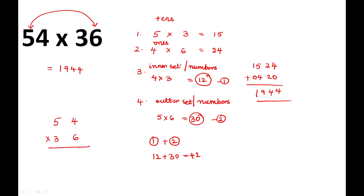Let's verify: 6 × 4 = 24, carry 2; 5 × 6 = 30 + 2 = 32, put 2 carry 3; 4 × 3 = 12 + 1 = 13; 5 × 3 = 15 + 1 = 16. Adding the partial products: 4, 2 + 2 = 4, 6 + 3 = 9, 1. This confirms our answer of 1944.